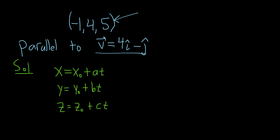So this is the formula for the parametric equations of a line in space. In this formula, x naught, y naught, z naught is a point on the line. So that's given to us in the problem.